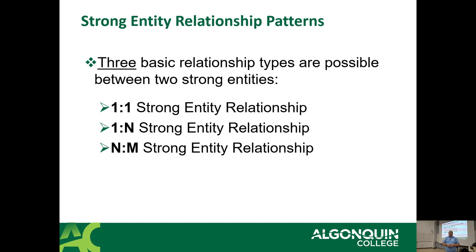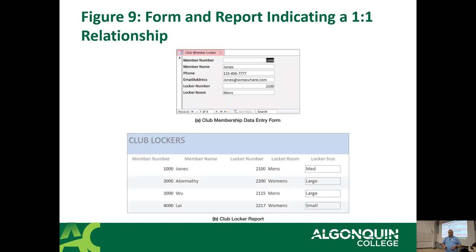Strong entity relationship patterns: there are three basic relationship types between strong entities — one-to-one, one-to-many, and many-to-many (that's what N:M means). This example shows a one-to-one relationship between lockers and a person. Each person is only allowed to have one locker — you can only rent one locker at a time at this college.